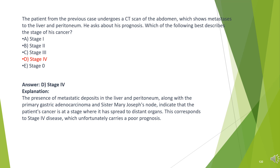The answer is D. Stage 4. The presence of metastatic deposits in the liver and peritoneum, along with the primary gastric adenocarcinoma and Sister Mary Joseph's node, indicate that the patient's cancer has spread to distant organs. This corresponds to Stage 4 disease, which carries a poor prognosis.